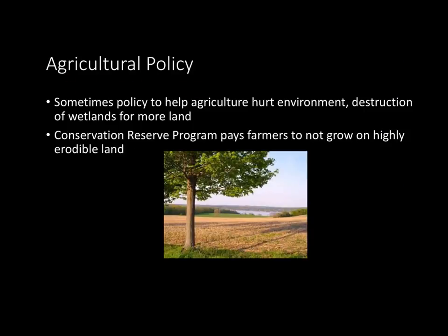Let's look at agricultural policy. Sometimes policy can help agriculture but hurt the environment — for example, people used to destroy wetlands to create more farmland, but as we know now, wetlands are incredibly important and that's really destructive. There's something known as the Conservation Reserve Program, which basically pays farmers to not grow on highly erodible land. It's a really good program because it literally pays farmers to maintain their soil and not do anything risky.